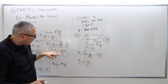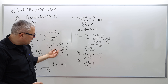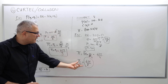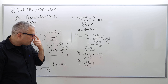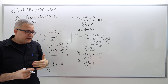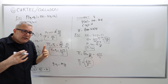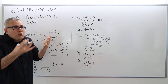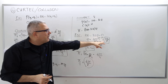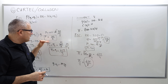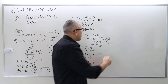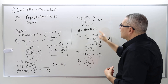If they collude, each firm earns 625/8. If they don't, they earn 625/9 each. Since 625/8 is greater than 625/9, both firms have incentive to collude. The reason: competition leads to high aggregate output, a lower market-clearing price, and lower profits than under monopoly.